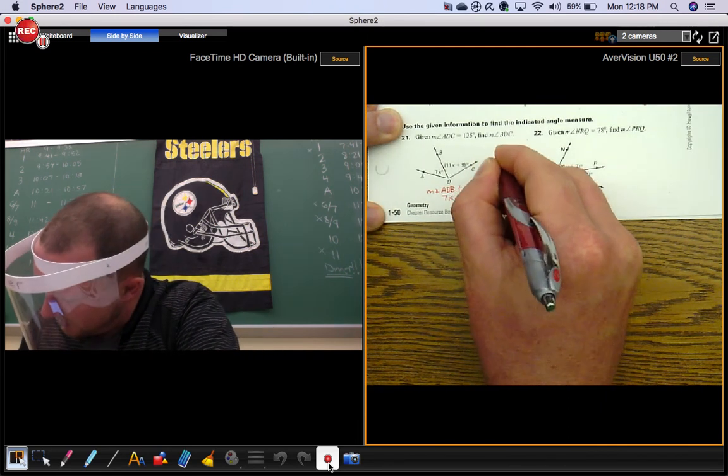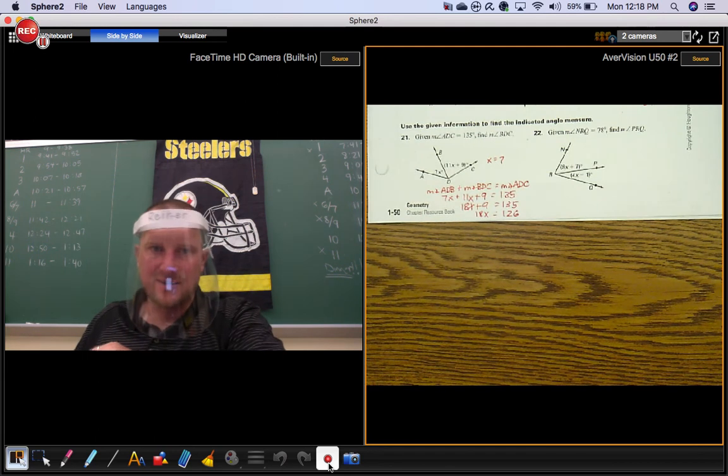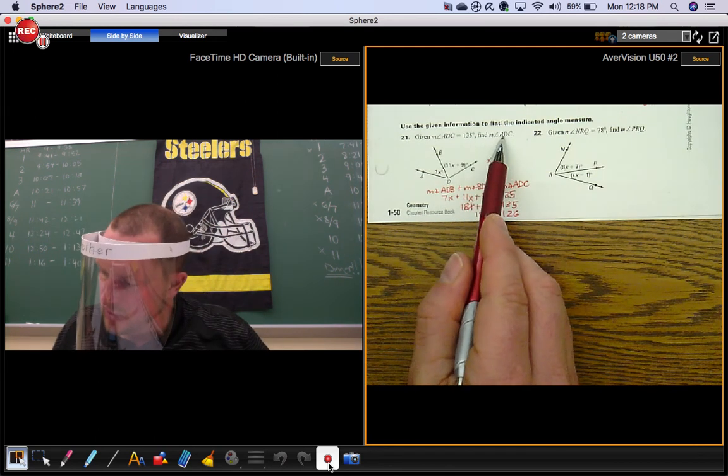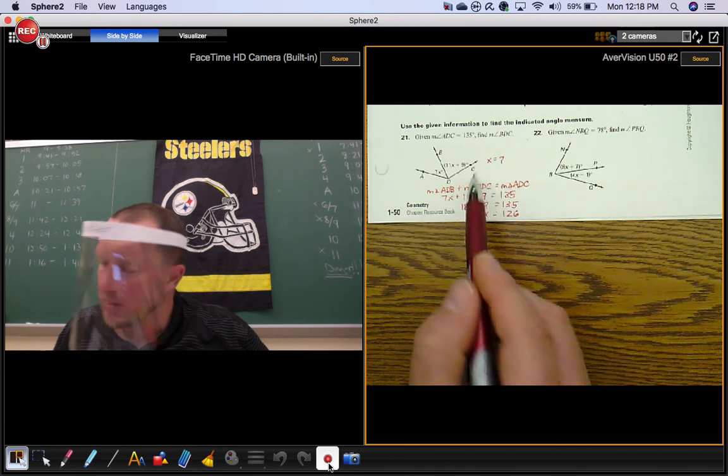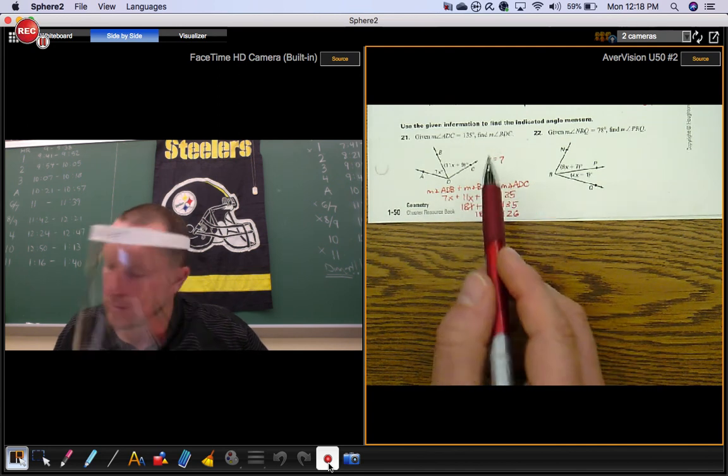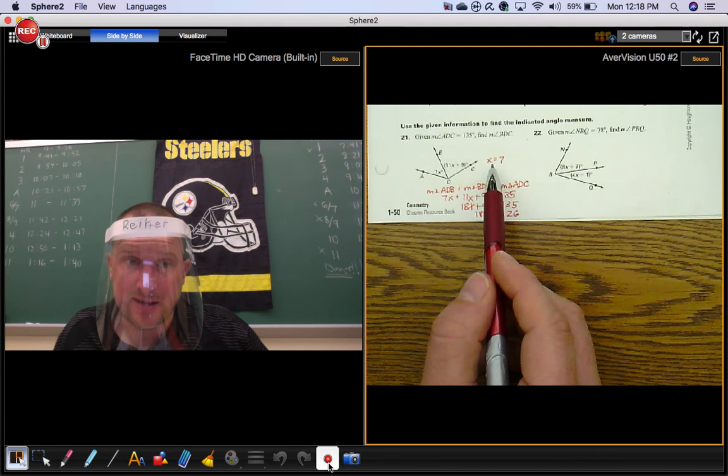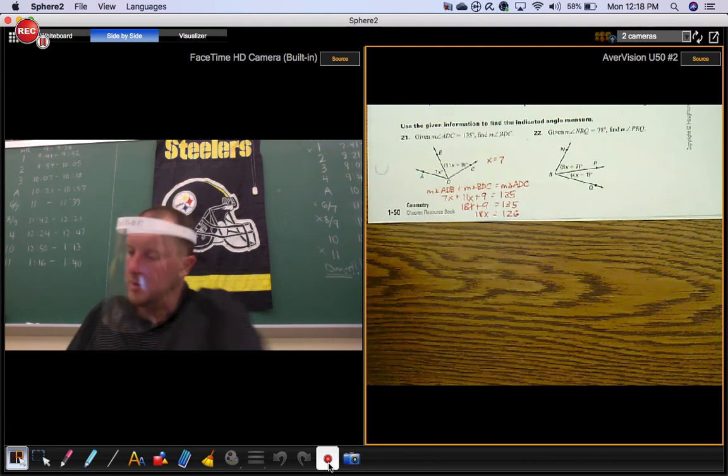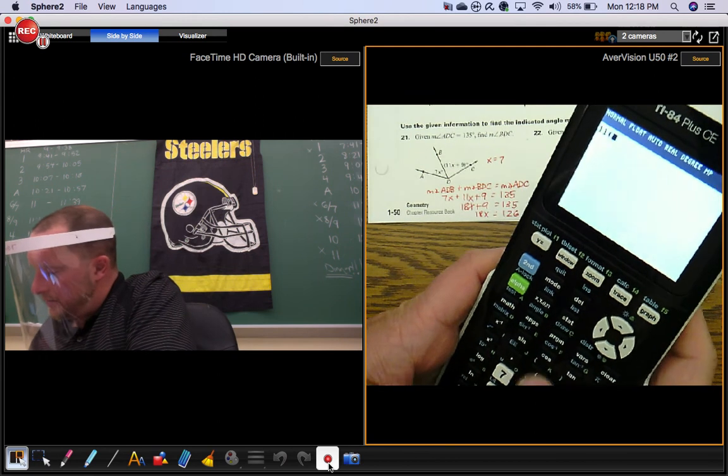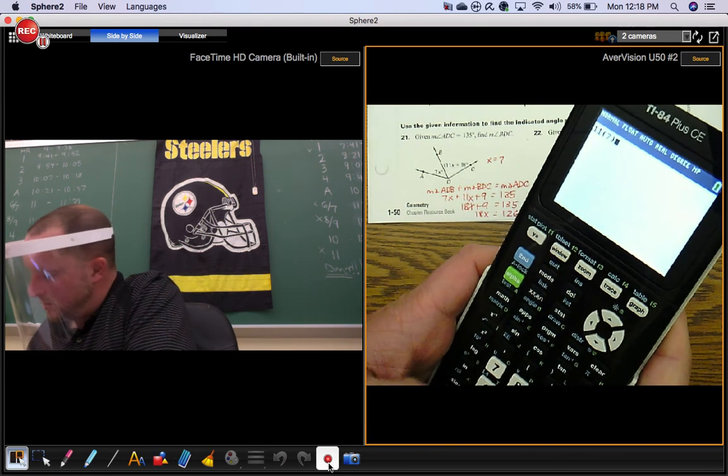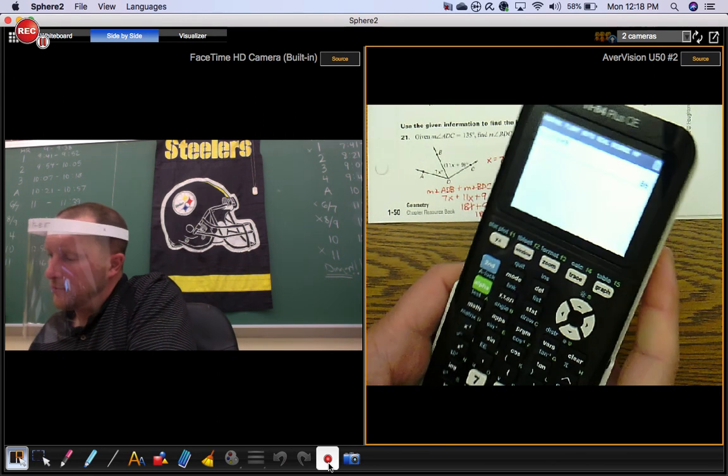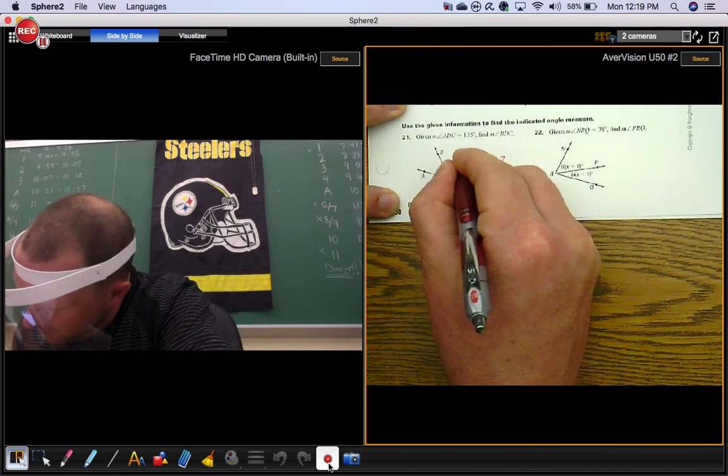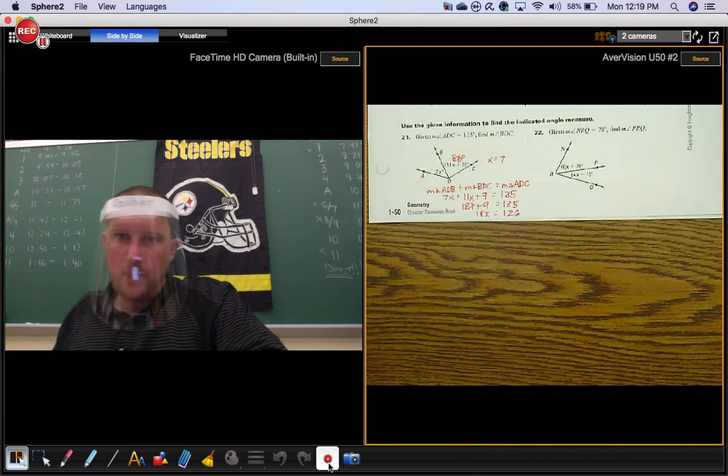I'll just kind of sneak it up here because I'm out of room. x is 7. Now they wanted you to find measure of angle BDC, so if you just stop here you're wrong. The answer isn't 7. x is 7, but what's the measure of angle BDC? It's 11 times 7 plus 9, which would be 86.